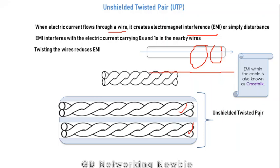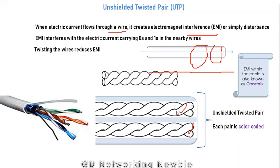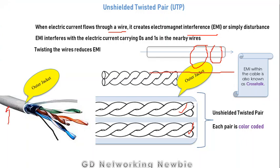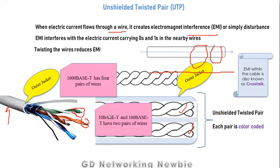These pairs are color coded, with a color scheme on the wires, and we wrap them in an outer jacket. This is the real picture of the UTP cable you can see in the market. We can see these pairs inside, and sometimes we have two pairs and sometimes four pairs, depending on the standard.